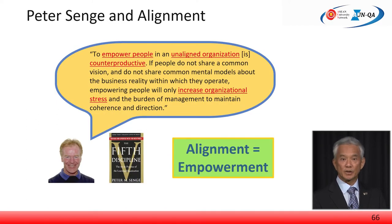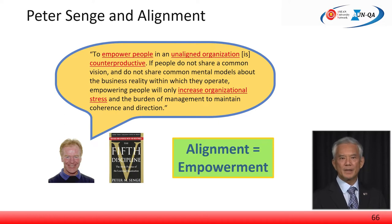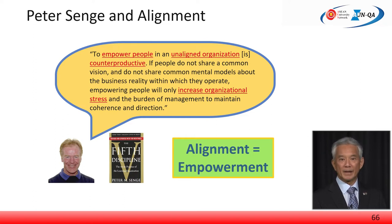This slide shows a good quote by Peter Senge on the concept of alignment: to empower people in an organisation that is not aligned is to be counterproductive. Where people do not have a common vision of what the organisation wishes to achieve, empowerment would lead to people doing what they feel is right but may not be aligned. This puts a burden on management to maintain coherence and direction. But when everyone thinks in the same way and has the same goal and objective, the same mental model, everything works beautifully and it is actually easier to get things done.